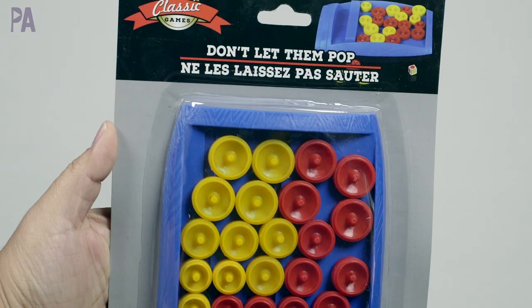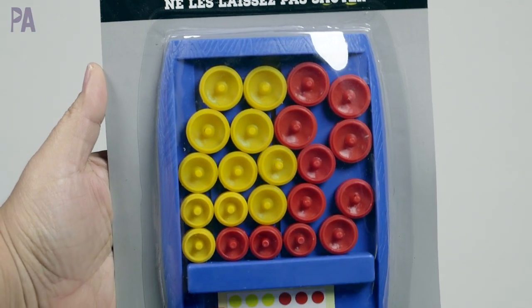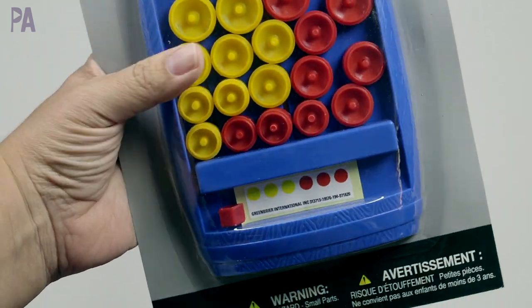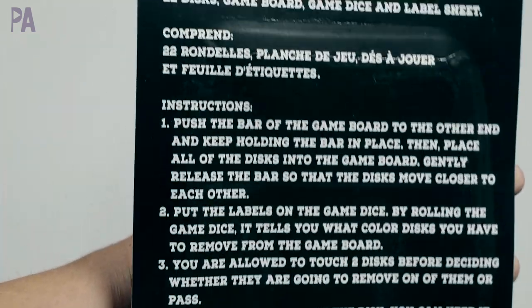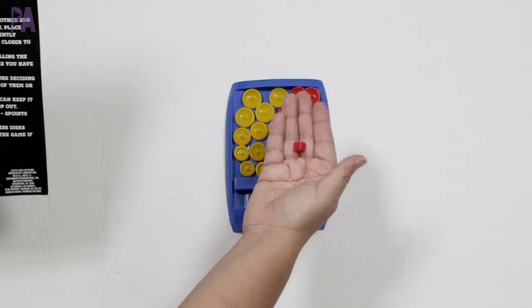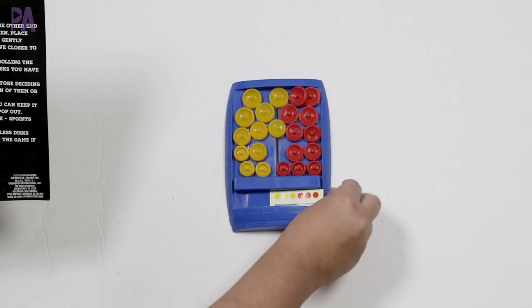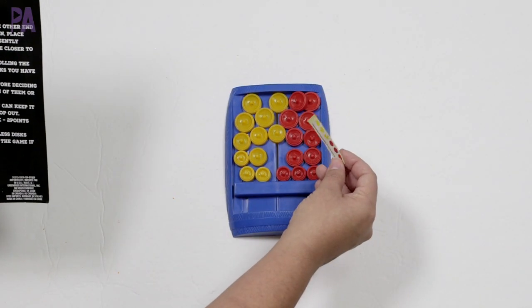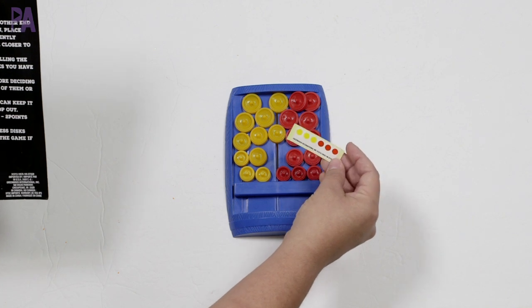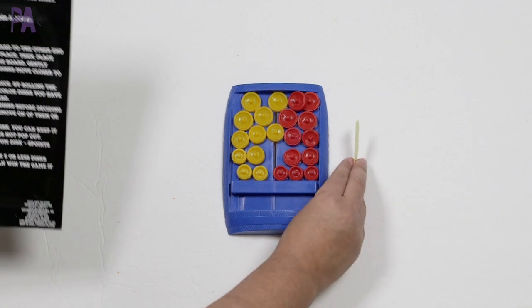Another game here we have is Don't Let Them Pop. Instructions on the back again. It says it comes with 22 discs, which are these little discs here. Game board is a little game dice, which is super tiny, and a label sheet. So we're going to have to put the labels on the die, I think. Yeah, so let's do that.